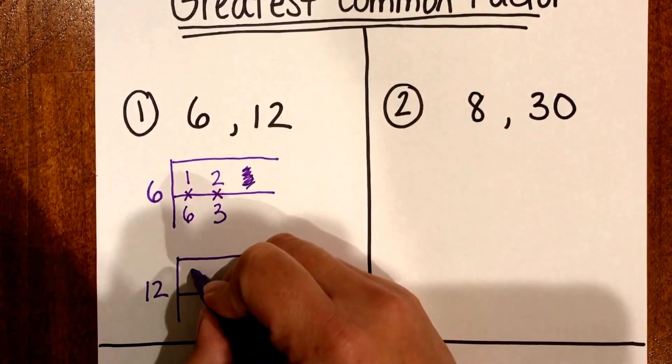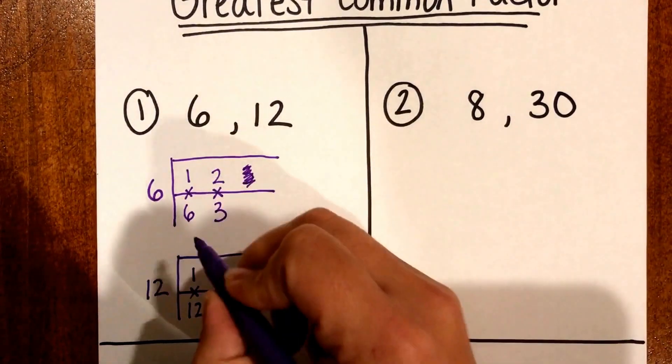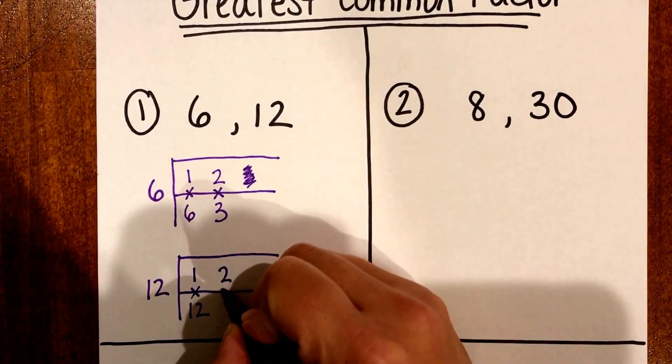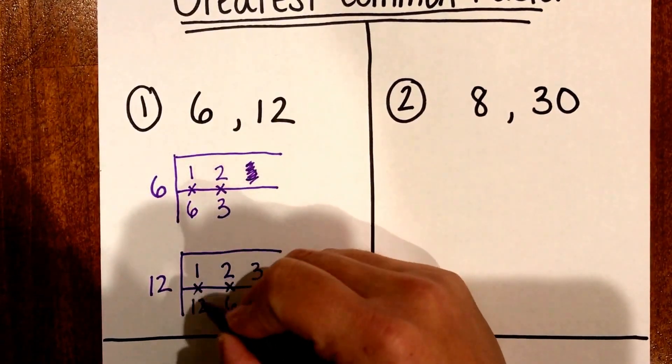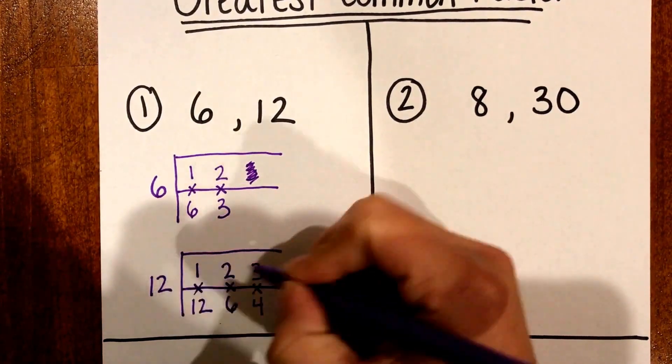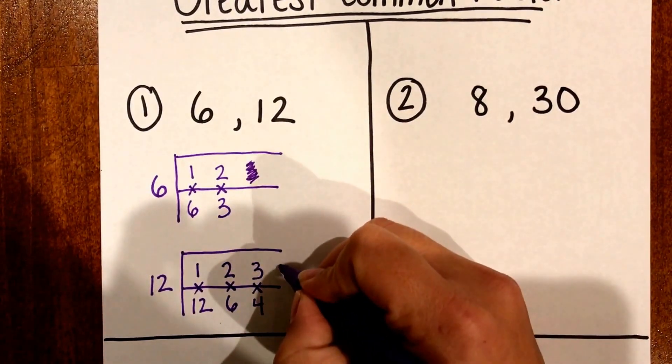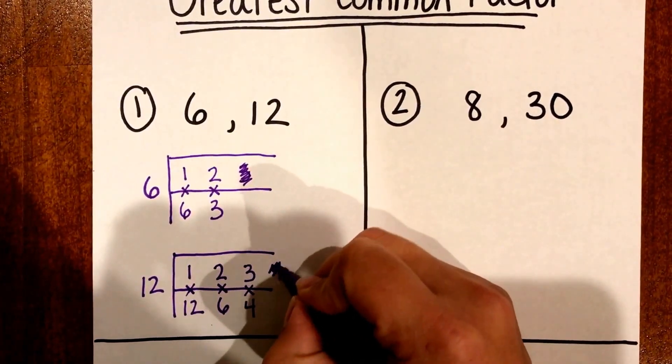So let's go to 12. Start with 1. 1 times 12 is 12 and I'm going to go up to 2. 2 times 6 is 12 then I can go to 3 and I don't have any 3's so I can continue. So 3 times 4 is 12 and then I know that I would try 4 but I already have a 4 in one of my facts so I can stop.